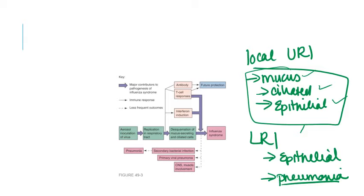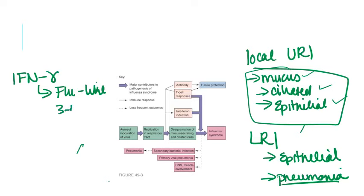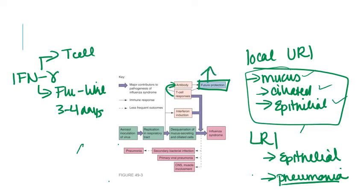Pneumonia can be a viral or bacterial process. During infection, the body produces a lot of interferons — interferon gamma is heavily promoted — and it's actually the interferon that leads to the flu-like symptoms patients experience. This systemic production occurs within three to four days of infection, almost exactly when patients feel symptoms. The interferon drives T cell production and engagement, which leads to better antibody engagement. T cell responses are important for recovery, while antibody responses are what prevent future disease.